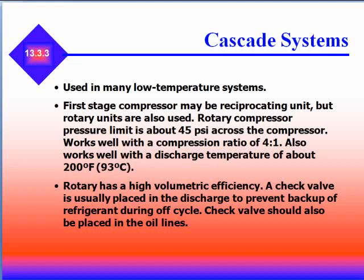Cascade systems are used in many low temperature systems. The first-stage compressor may not be a reciprocating unit — rotary units are also used. Rotary compressors are pressure-limited to about 45 PSI across the compressor and have a high volumetric effect. A check valve is usually placed in the discharge to prevent backup of refrigerant during the off cycle, and check valves should also be placed in the oil lines.